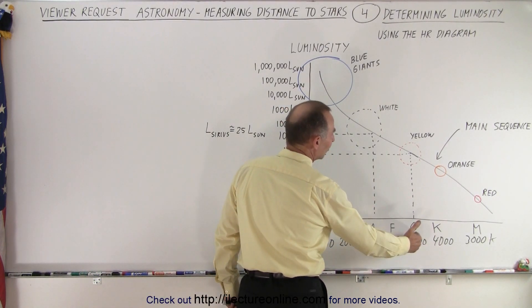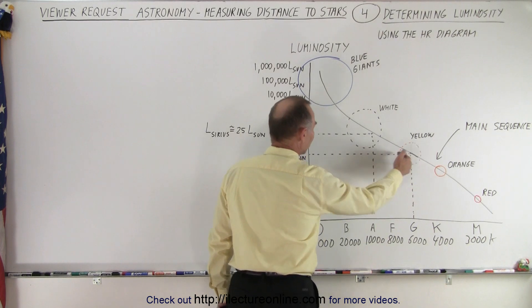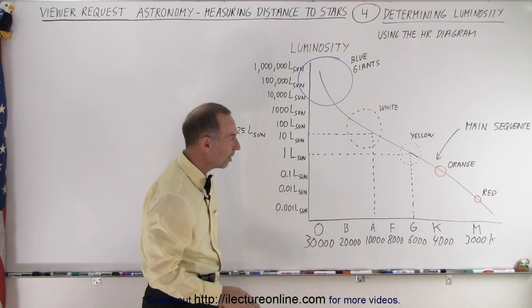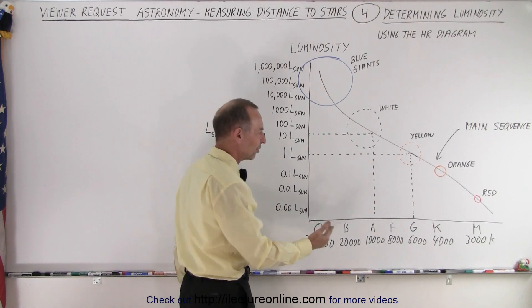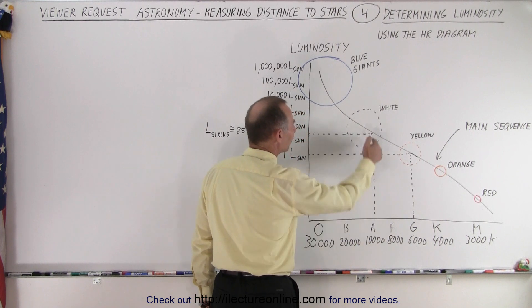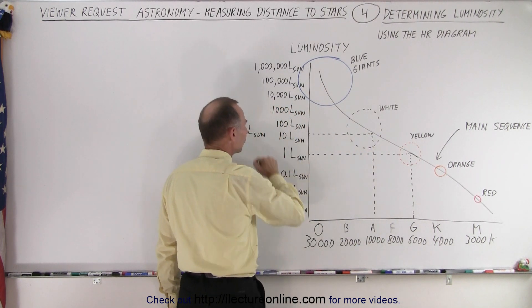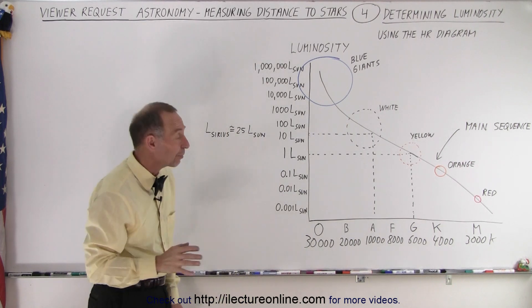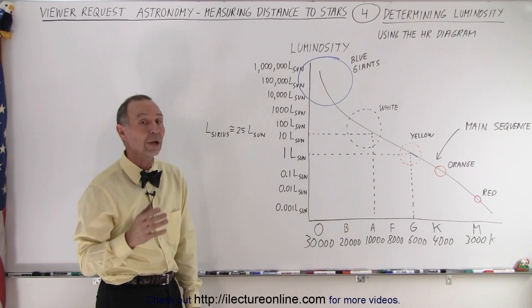And for the Sun we'd say it's a G2 type star. And so therefore it has 1 times the luminosity of the Sun. Makes sense. But what about a star like Sirius? Well Sirius was an A type star with a surface temperature right around 10,000 Kelvin. And we then determined from the HR diagram that that star has a luminosity of about 25 times the luminosity of the Sun.